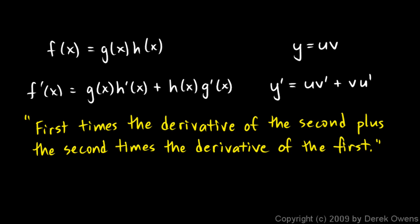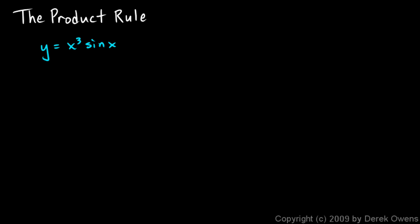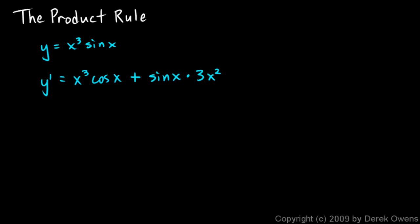When I do the derivative of a product, this is what I'm saying in my mind: the first times the derivative of the second plus the second times the derivative of the first. With that in mind, let's work this example: y equals x cubed times the sine of x. y prime will be the first function, x cubed, times the derivative of the second — and the derivative of sine x is cosine x — plus the second, sine of x, times the derivative of the first. The derivative of x cubed is 3x squared. So y prime is x cubed cosine x plus sine x times 3x squared.